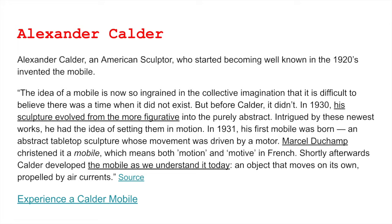In 1930, his sculpture evolved from the more figurative into more purely abstract. Intrigued by these newest works, he had the idea of setting them in motion. In 1931, his first mobile was born — an abstract tabletop sculpture whose movement was driven by a motor. Marcel Duchamp christened it a mobile, which means both motion and motive in French.